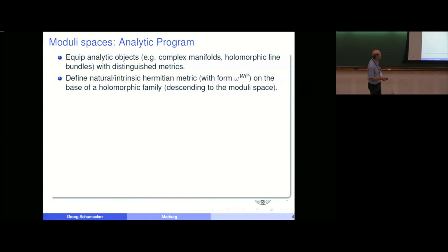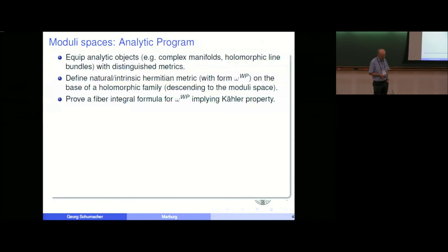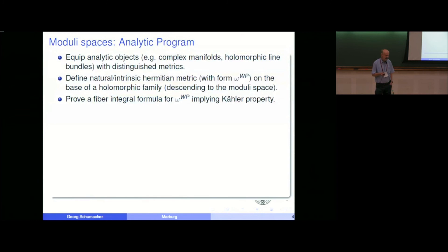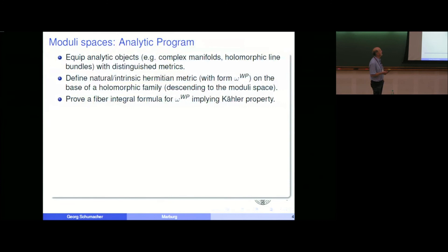One would like to prove a fiber integral formula for the Weil-Petersson form, which implies the Kähler property. A fiber integral formula works as follows: we have a family of fibers of dimension D, we look at a D+1, D+1 closed form, and the fiber integral over a variety of complex dimension D provides a form of dimension 1. The construction is compatible with taking exterior derivatives. So if we integrate a closed form, the result will automatically be closed, and there is nothing to worry about regarding the Kähler property — it will automatically follow from the fiber integral.